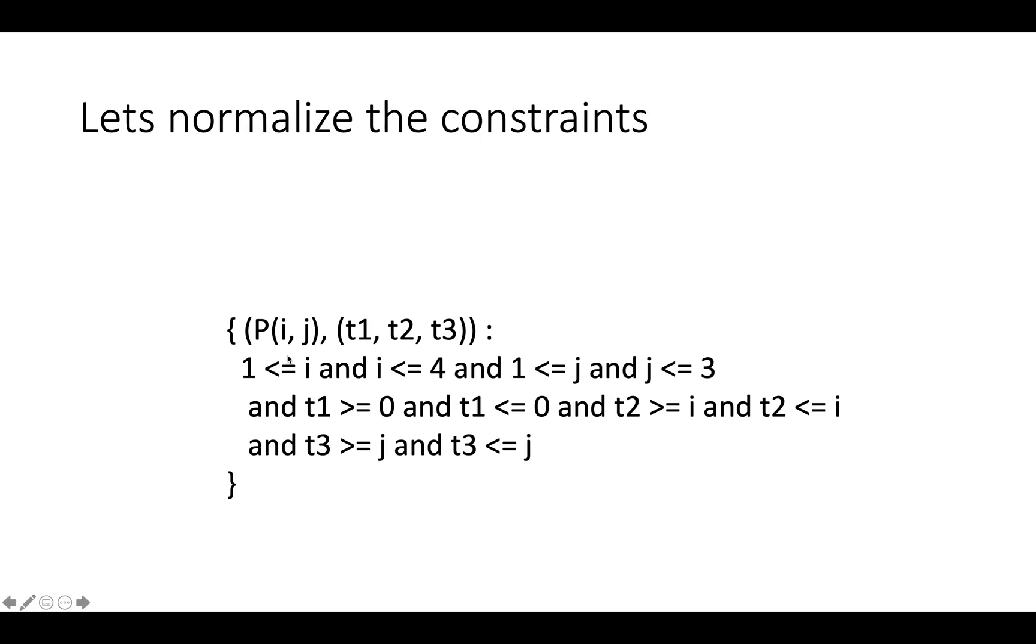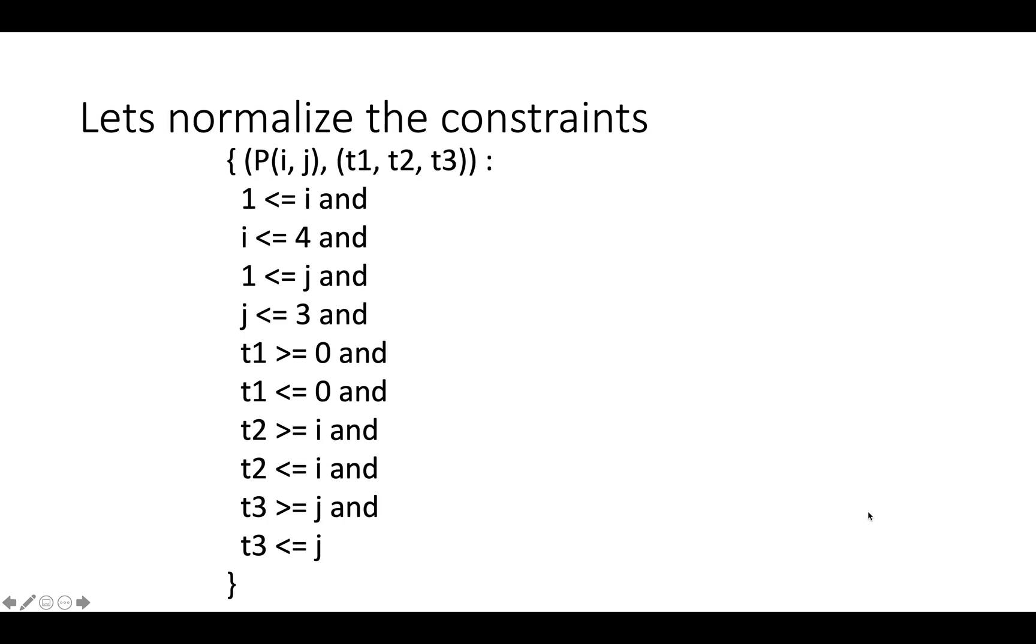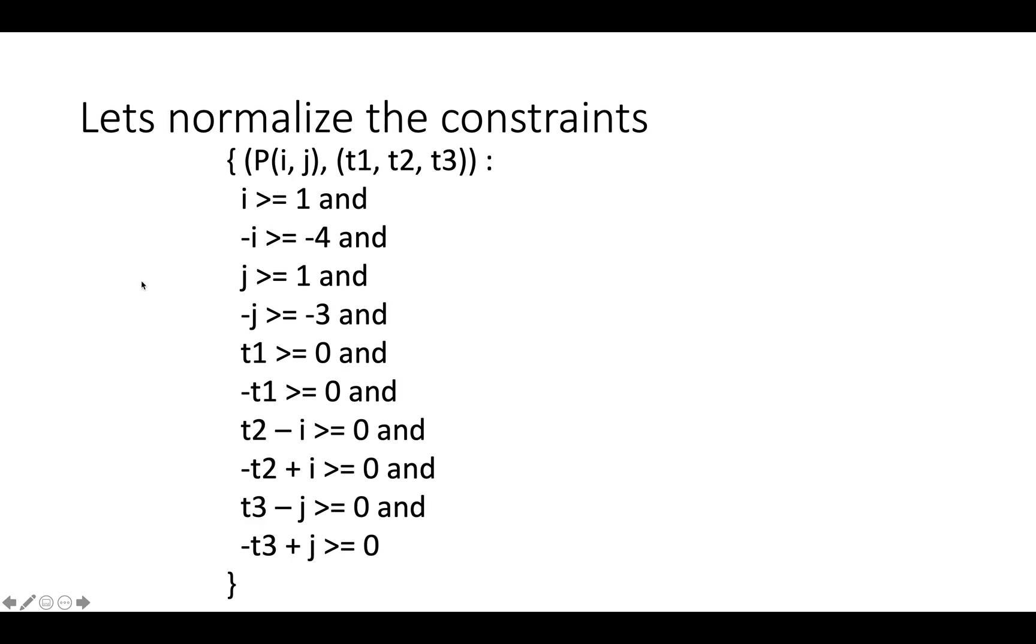Now let's normalize the constraints. We can rewrite this by saying this is equivalent to the set of pairs P(i,j), [t1, t2, t3] where i >= 1, i <= 4, j >= 1, j <= 3, t1 >= 0 and t1 <= 0. We've just replaced all the equalities with sequences or conjunctions of inequalities and made everything more explicit. We can normalize the constraints even more by writing them out in this slightly different format, moving the variables around and making sure they're all greater than or equal, then moving all the variables to the left hand side and all the constants to the right hand side. We've written this in a very uniform notation, so one of the constraints would be i >= 1, another would be like t3 - j >= 0, and so on.